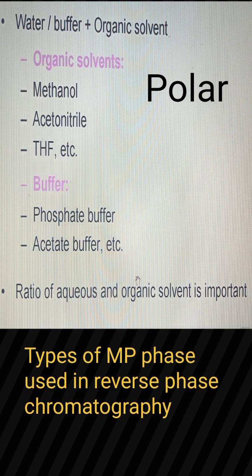The mobile phases used in reverse phase chromatography are water, buffer, and organic solvents. Organic solvents include methanol, acetone, and THF. Buffers include phosphate buffer and acetate buffer.